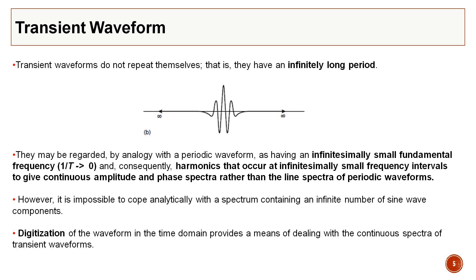Transient waveforms are those which don't repeat themselves and are supposed to have an infinitely long period. An infinitely long period means an infinitely small fundamental frequency — 1/T tends to zero. This means the harmonics occur at very small frequency intervals, giving a continuous amplitude and phase spectrum rather than a line spectrum.